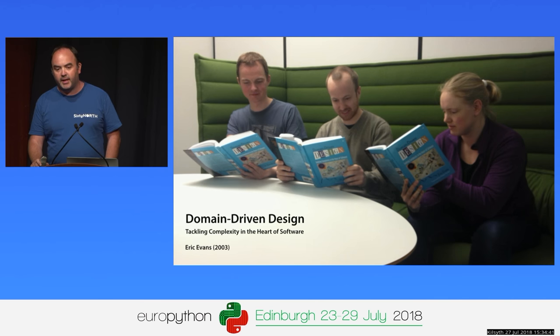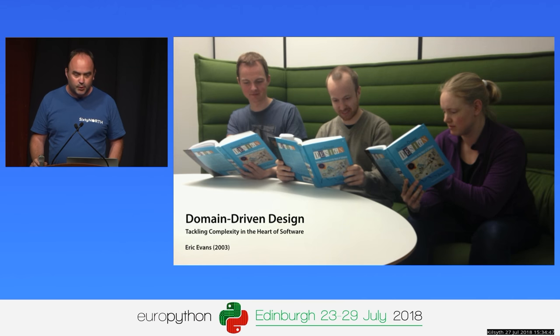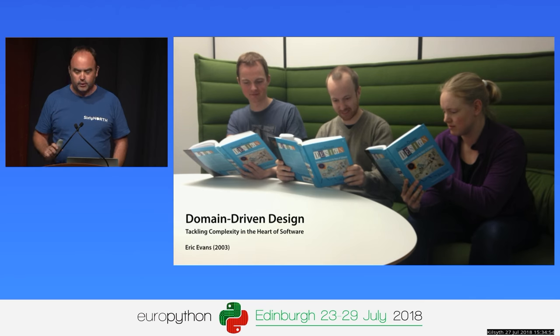One approach to learning DDD is to go out and buy the original book by Eric Evans from 2003. It's a very heavy blue book and almost completely indigestible unless you've already been through a DDD project. It's a great book to read when you've been through a couple of DDD projects, ideally one of which has failed, and then you will understand what Eric Evans was talking about. It is not a good starting point. Later in the talk, I'll refer you to some much better starting points for getting to grips with DDD.